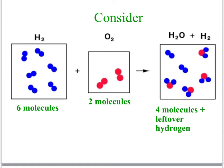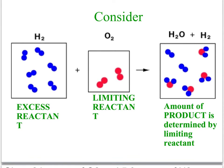Let's consider one more reaction. In this reaction we have six molecules of hydrogen and two molecules of oxygen. In this situation, we would expect oxygen to be the limiting reactant, because the most that can be formed would be two molecules of water, and then there is leftover hydrogen. So hydrogen is the excess reactant and oxygen is the limiting reactant.